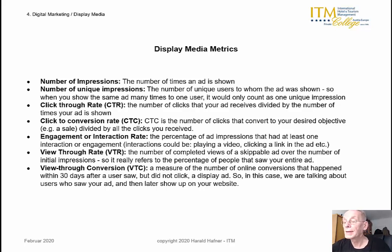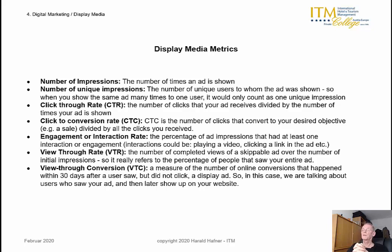Click-through rates and click-to-conversion rates are metrics especially important to direct response advertisers — if you want a result generated directly from advertising. On the other hand, engagement rate and view-through rates on video are important for brand advertisers, who have less interest in click-through rates since they want to create image or awareness. For them, the number of impressions or unique impressions are important.